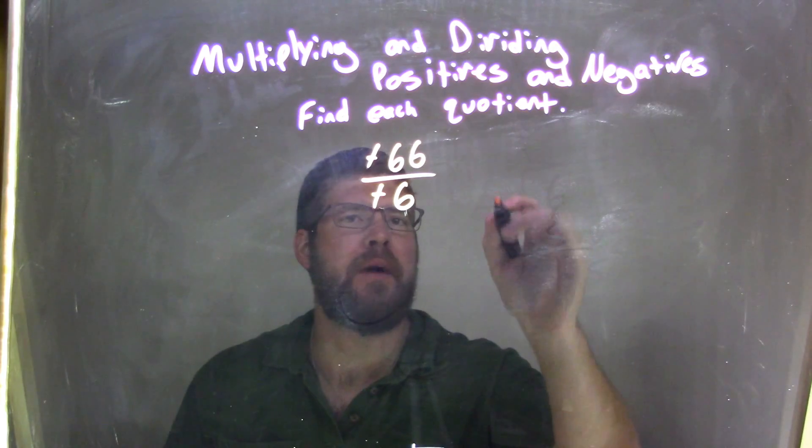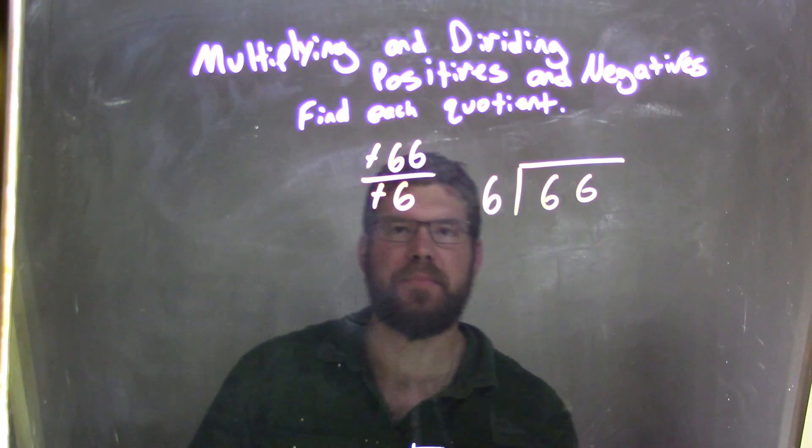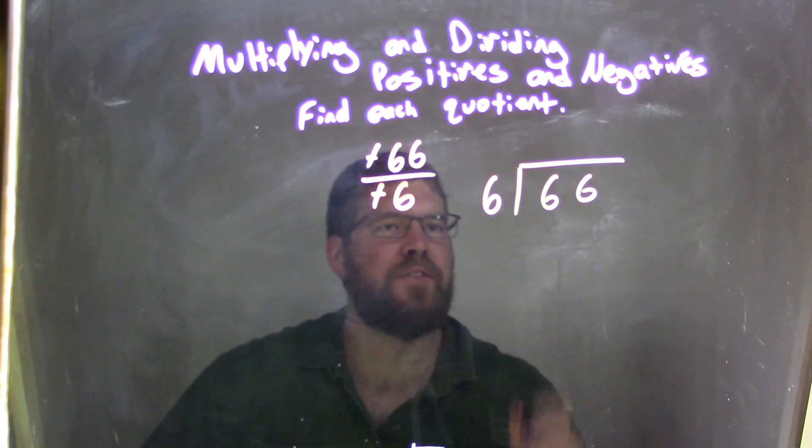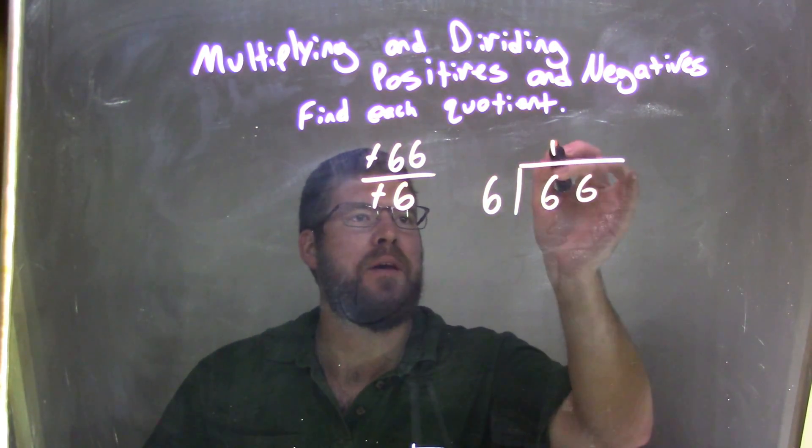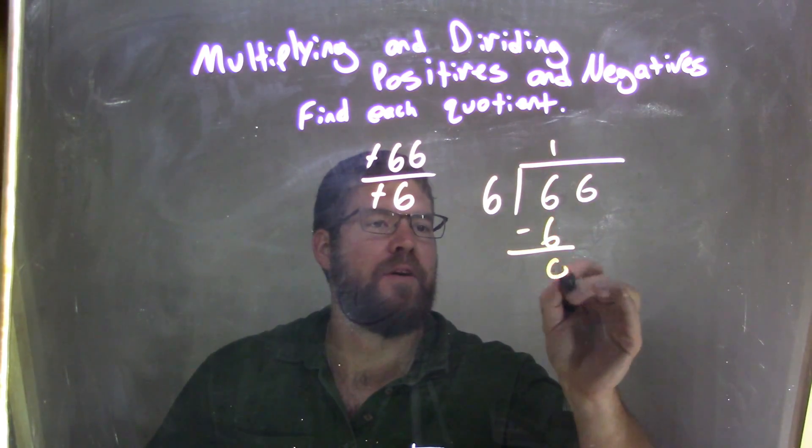So let's use the long division method here. Well, 66 divided by 6, we have 6 on the outside and 66 here. Well, 6 goes into 6 one time, and 1 times 6 is 6. We subtract it, 6 minus 6 is 0, perfect.